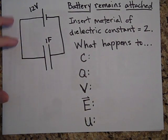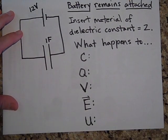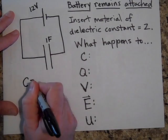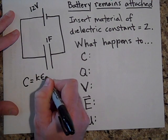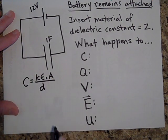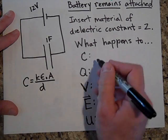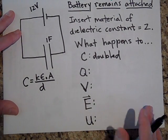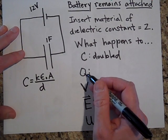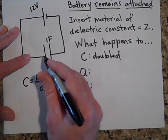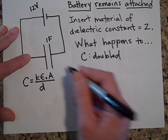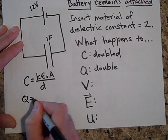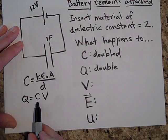Go ahead and pause. We're back — hopefully you have answers to all of these. What's going to happen to the capacitance? Capacitance is kε₀A/d, and since we doubled the k, the capacitance is going to be doubled. How about the charge? If the capacitance is doubled and the voltage remains 12 volts, the charge doubles because Q = CV.